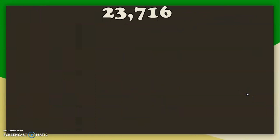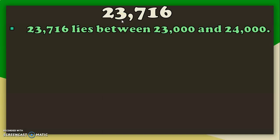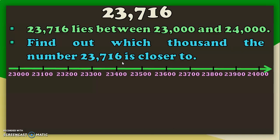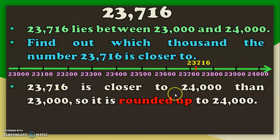Let us take another example with the 5-digit number 23716. We need to round it off to the nearest 1000. The thousands digit is 3, and 3716 lies between 3000 and 4000. So, 23716 lies between 23000 and 24000. Using a number line, we can see that 23716 is above the midway and closer to the upper limit 24000. So, it is rounded up to 24000.